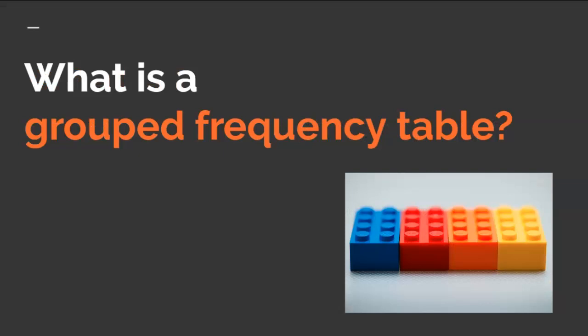Frequency tables are a part of descriptive statistics. We organize a large set of numbers to better describe and understand the data. Sometimes we have a data set that covers a wide range of values. For example, what if we had a student score a zero on a statistics exam and another student score a hundred? In that case, a regular frequency table would be ridiculously large because it would have too many rows — a hundred rows to capture all values from 0 to 100. Instead, we would use a grouped frequency table to have a more manageable sized table.